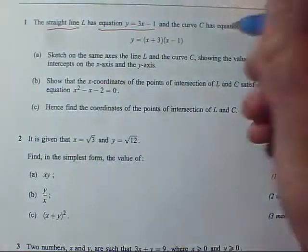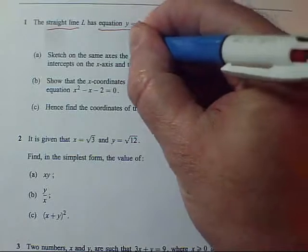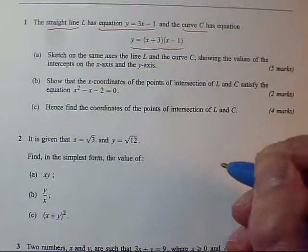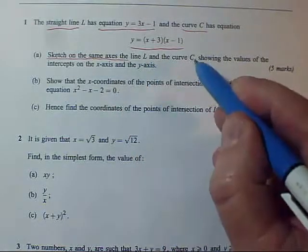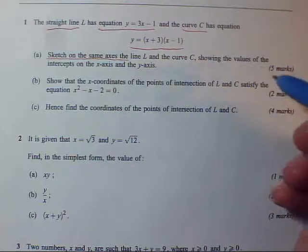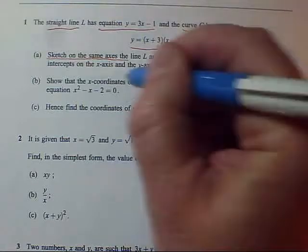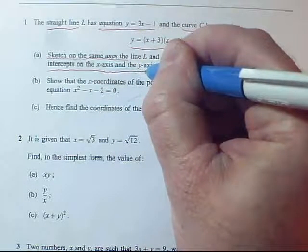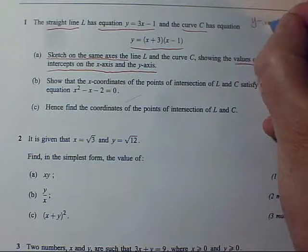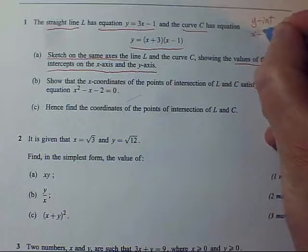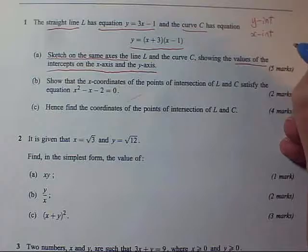Question one: we've got a straight line and its equation, and we've got a curve C and its equation. We've got to sketch on the same axes the line and the curve, and it wants us to show the values of the intercepts on the x and y axes. So we've got y-intercepts and x-intercepts, which you'd probably think of including on your sketches anyway.